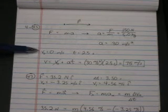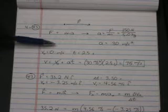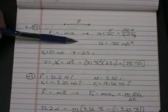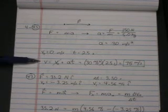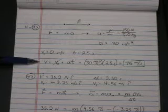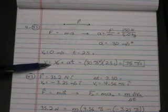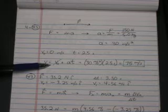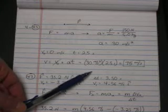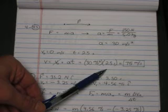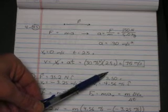Now, we do the kinematics. We know the initial velocity is zero. We know the time. We have the acceleration. So, we can solve for final velocity. V equals V0, which is zero, plus acceleration times time. 30 meters per second squared times the time of 2.5 seconds. And we get 75 meters per second.